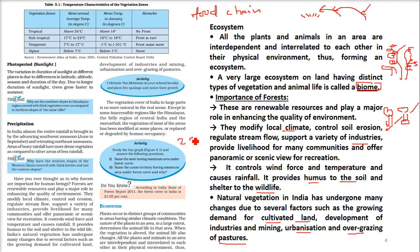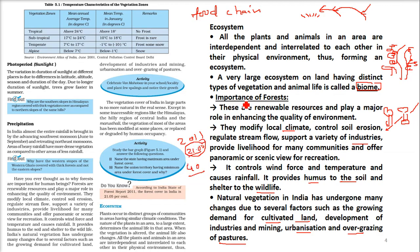According to the Indian State of Forest Report 2011, the forest cover in India is just 21.05% — it's alarming. We are the second most populous country on earth after China, and by around 2030 we will go ahead of China. To sustain all these people, we have just 21% forest cover, when we need at least 40% and above.